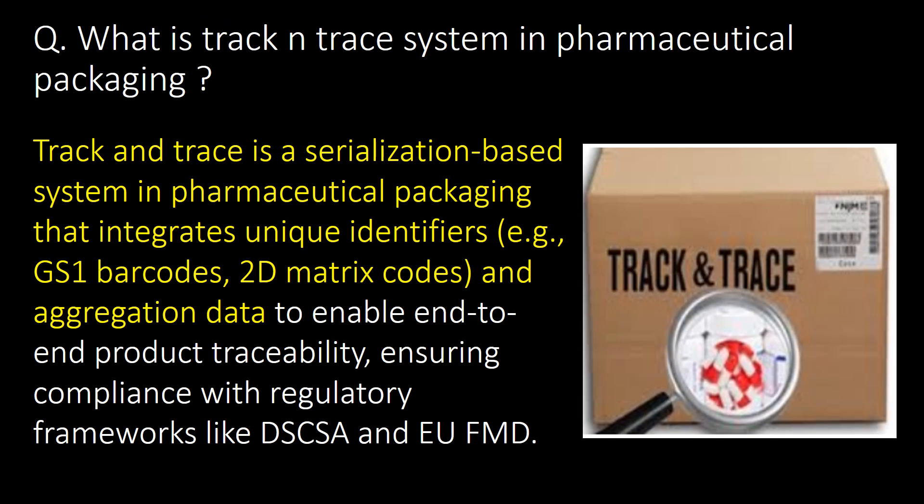What is a track and trace system in pharmaceutical packaging? Track and trace is a serialization-based system in pharmaceutical packaging that integrates unique identifiers, e.g. GS1 barcodes, 2D matrix codes, etc., and aggregation data.